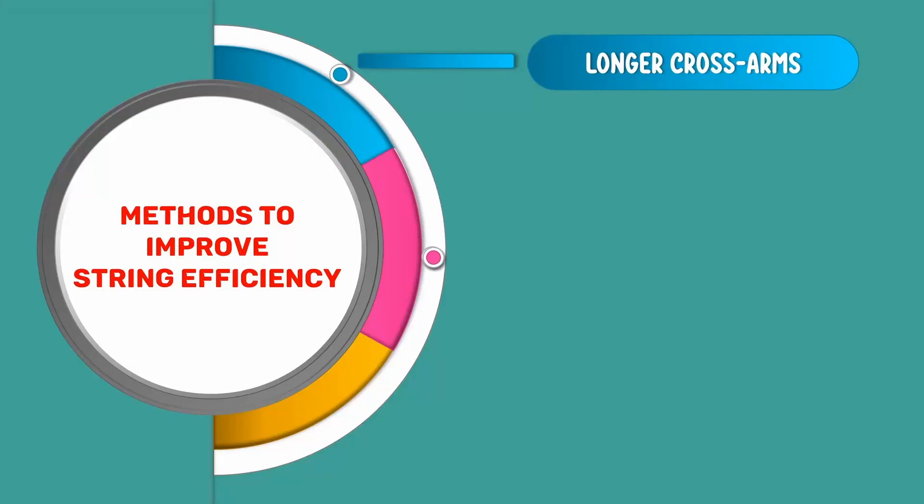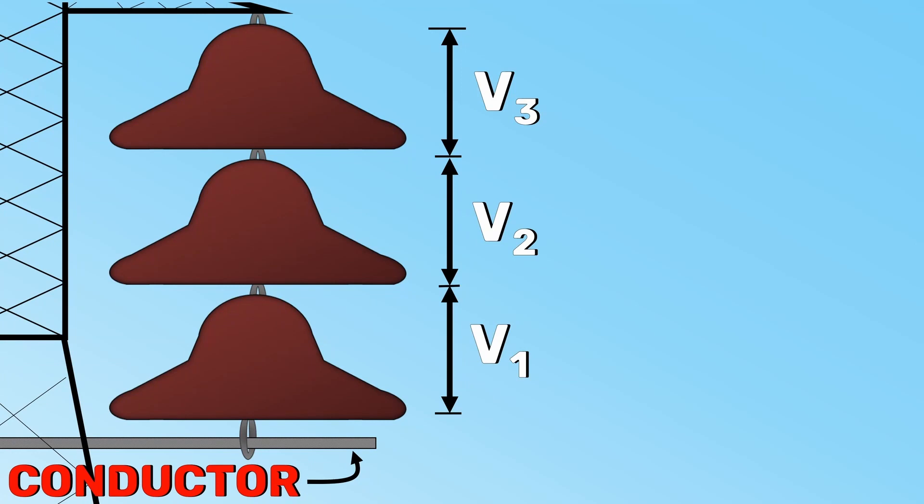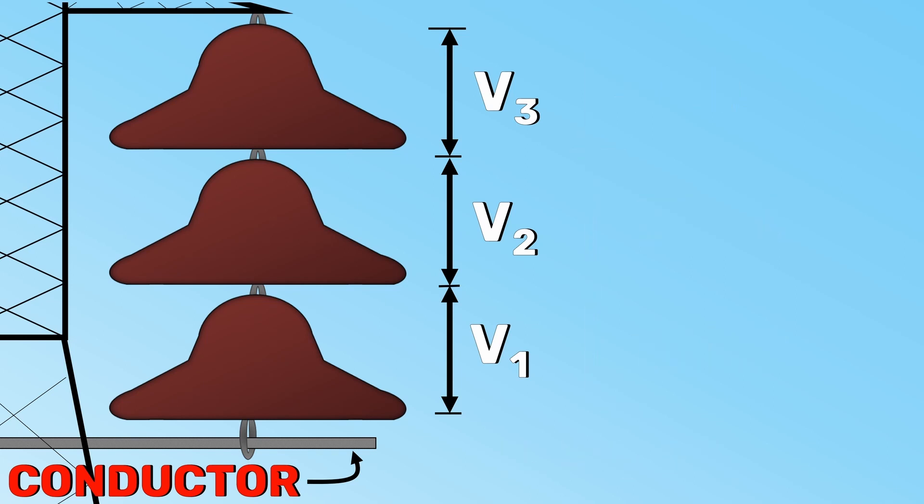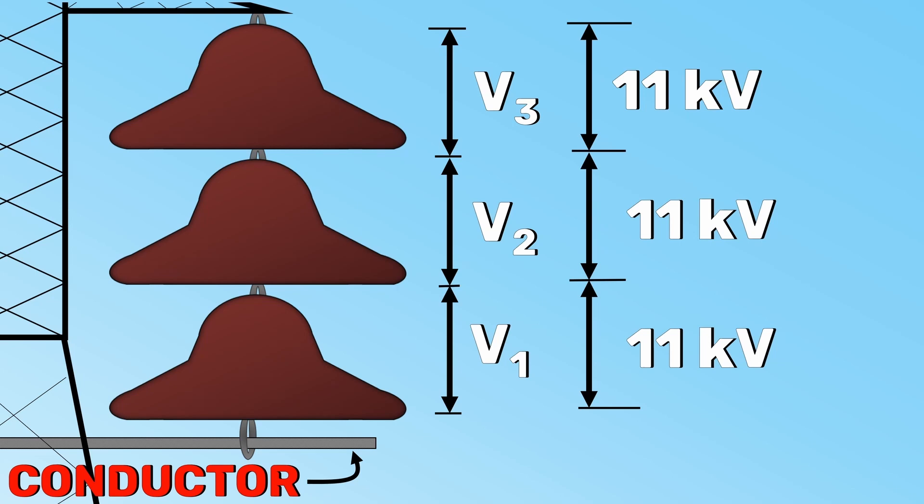Now, let's move on to the next method. Our aim is to keep the voltages V1, V2 and V3 equal. But in reality, V1 is greater than V2 which is greater than V3. So, somehow, we need to reduce the V1 and V2 to match with the V3.